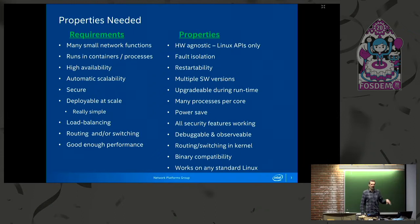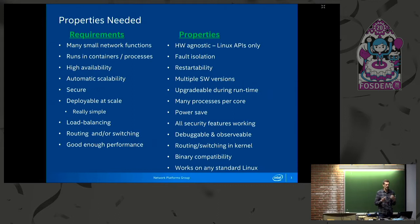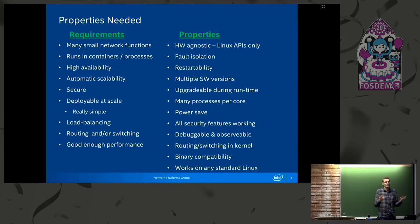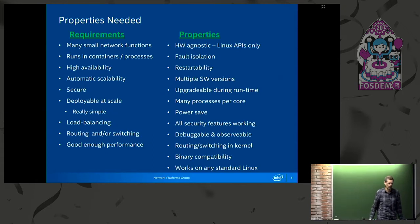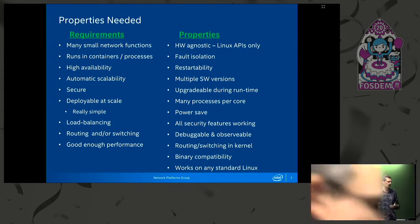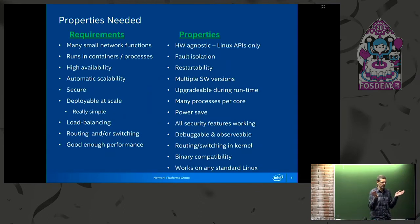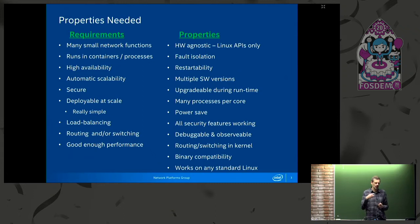If we look at the requirements from the previous page, what properties do you need in your system to satisfy those? You need to be hardware agnostic — using Linux APIs only — because if you deploy at scale, your systems will be very different and you can't have a million nodes that are exactly the same. You have to abstract away the hardware. You need fault isolation and restartability because we have many, many processes. They should be highly available and secure. Everything needs to be restartable — you can't just restart the whole system, just restart a single process.